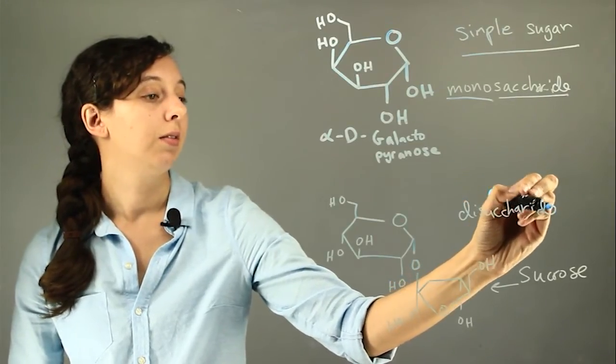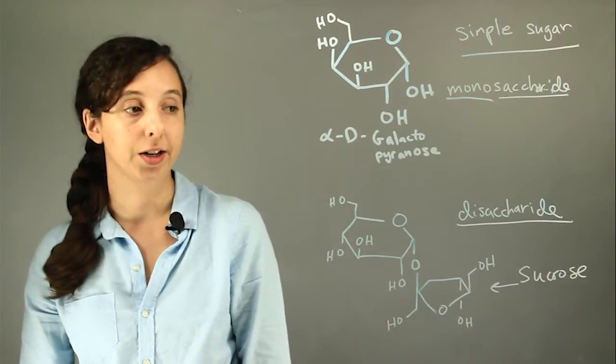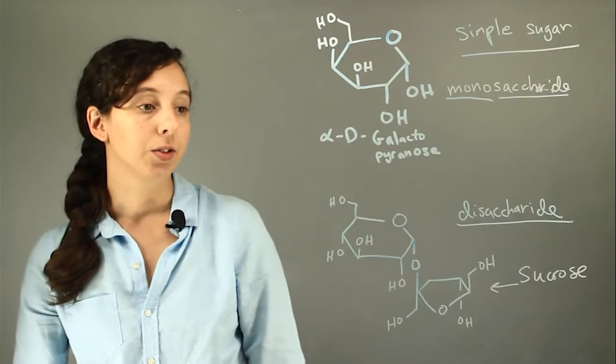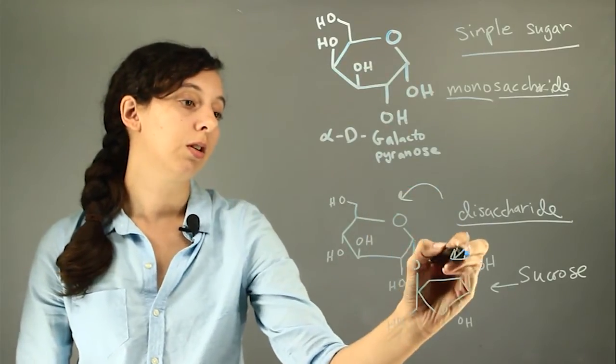So this is called sucrose. This is the specific disaccharide it is, and its general term is a disaccharide. So what this means is that you can see we have two, one, two sugars.